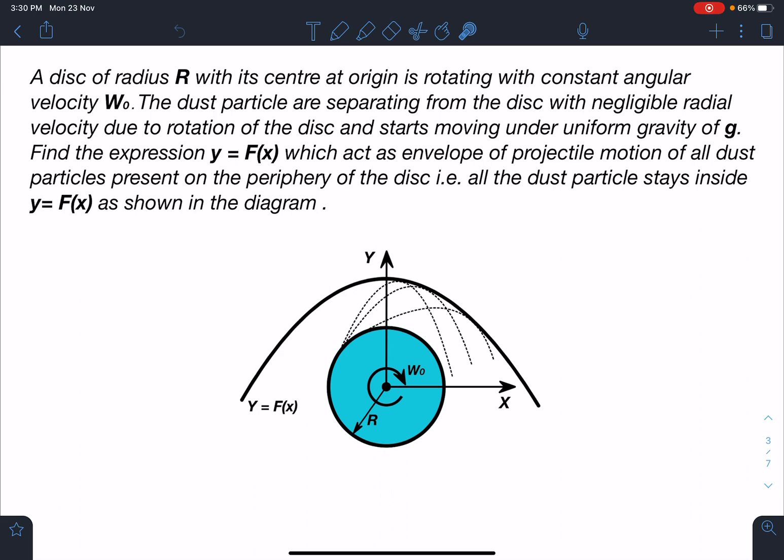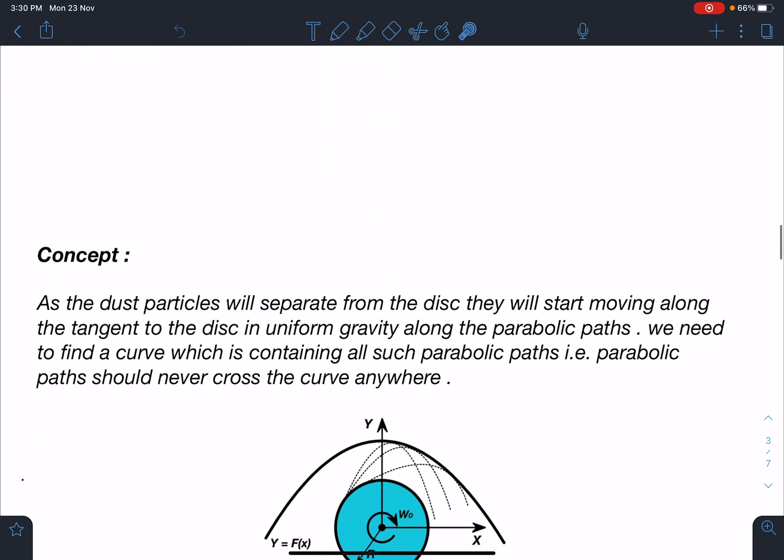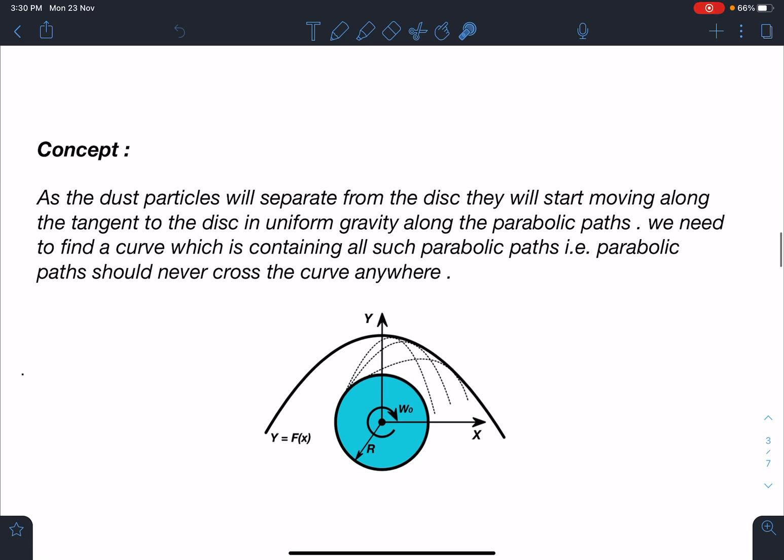Concept-wise, as the dust particles separate from the disc, they will start moving along the tangent to the disc in uniform gravity. The initial velocity it will have is Rω₀. These different particles at different locations will follow different parabolic paths because in uniform gravity, if initial velocity and acceleration due to gravity are not parallel, we are going to have a parabola.